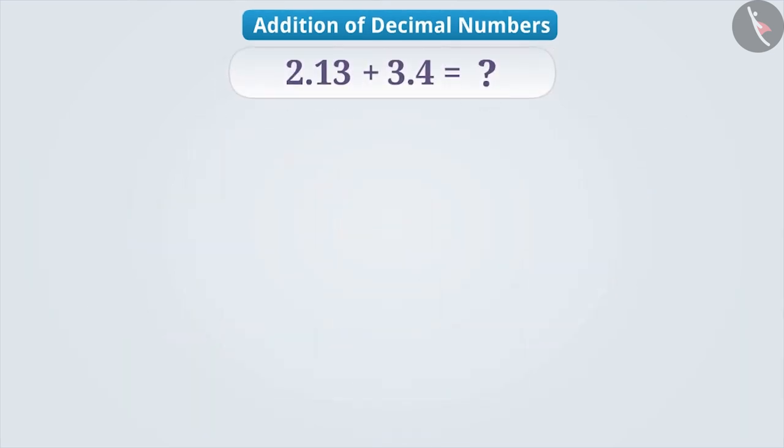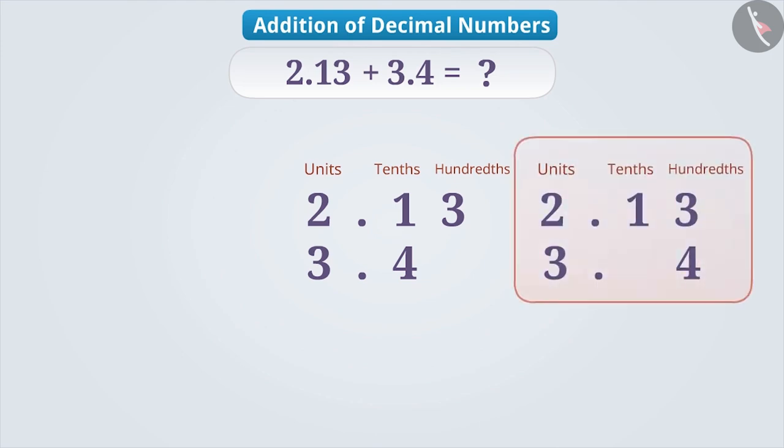In order to find the addition of decimal numbers mathematically, we write these numbers one below the other like this. But while doing so, it is important to focus on their places. We cannot write 2.13 and 3.4 like this. Can you tell the reason why? Think for a while.